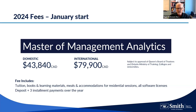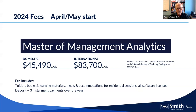For the April-May start program, fees go up. The domestic price is $45,490 Canadian dollars, and for international students it's $83,700 Canadian dollars. The same all-inclusive structure applies — covering tuition, books, learning materials, meals, accommodations, and all software licenses — and it's again broken down into the deposit and three installment payments.